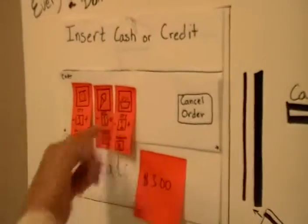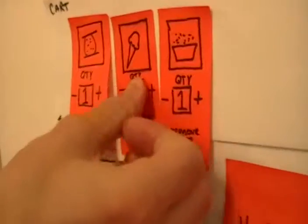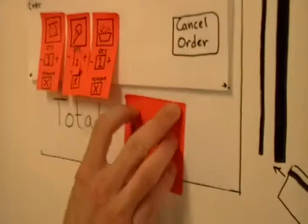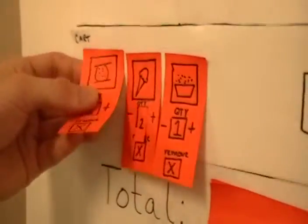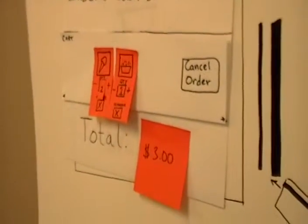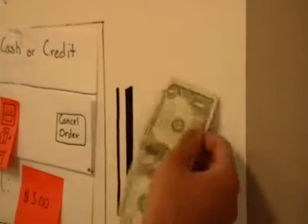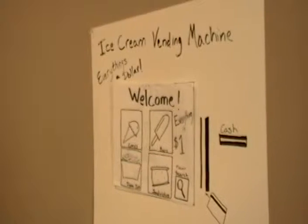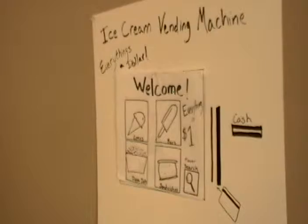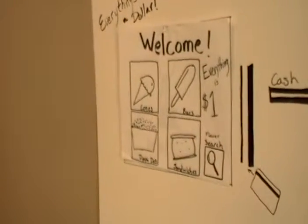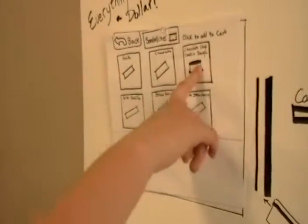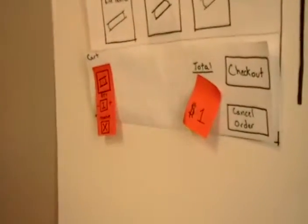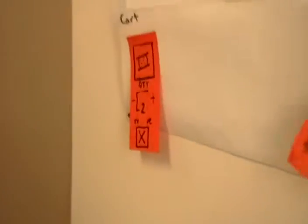And I'll check out. I think I'll add another ice cream cone. And I don't really feel like a sandwich, so I'll take that out — an ice cream sandwich. Let's do chocolate chip cookie dough, and I'll have two of those.